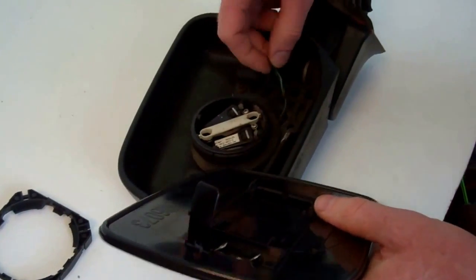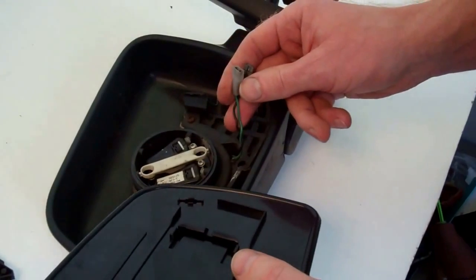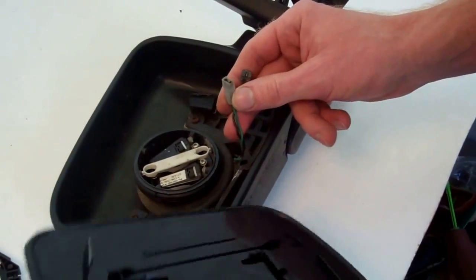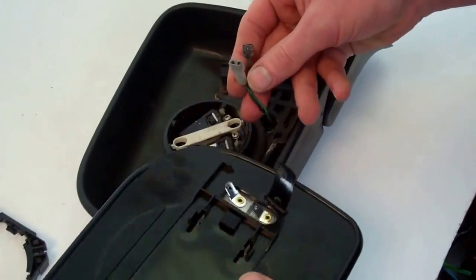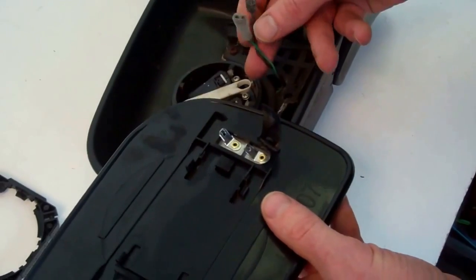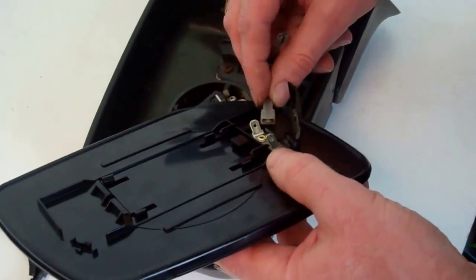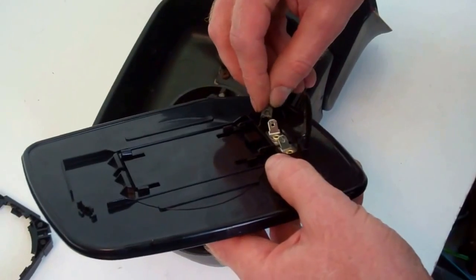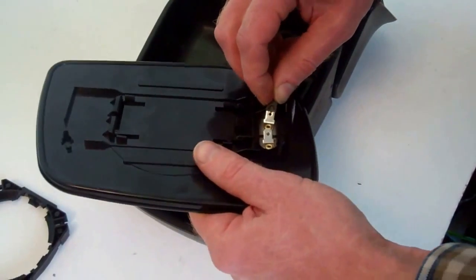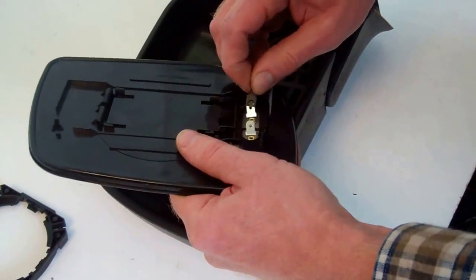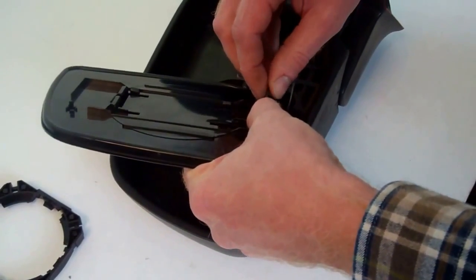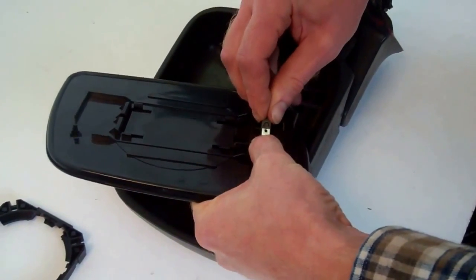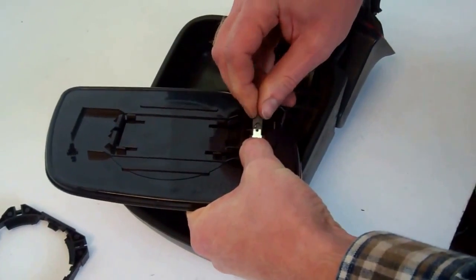The other thing that wasn't connected when we took our mirror glass off earlier, because we've been playing around, is the two connections for the heater. It doesn't matter which way round you get them. Then we're going to put the earth one on the top. You want to push them straight on; you don't want to twist it too much.